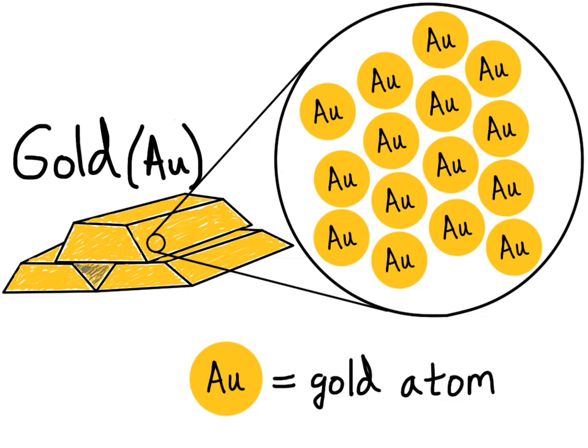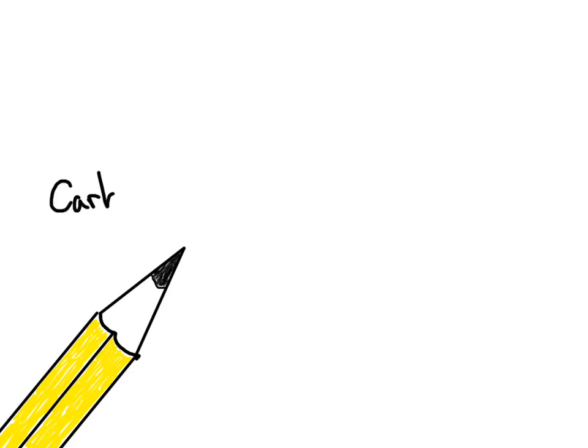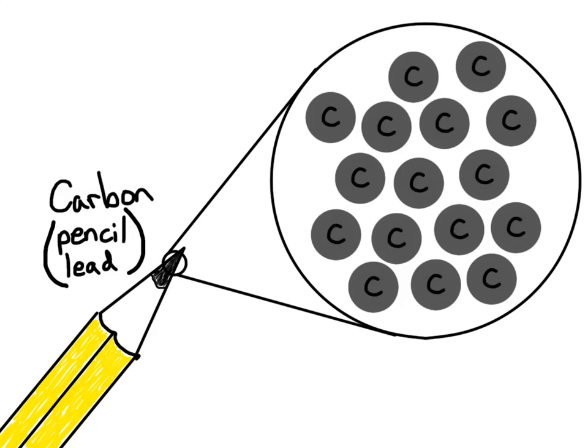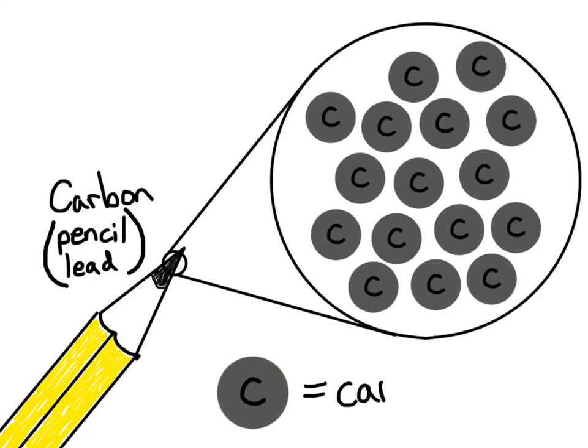Another element, more common, that we can find on the end of our pencil is the element carbon, which makes up our pencil lead. Like gold, carbon is an element. If we zoom in and look at the particles that make up the pencil lead, we would see all the same particle — all the same atom — and they would be carbon atoms. These gray spheres represent individual carbon atoms. So carbon is a pure substance as well; it's an element made up of just one type of atom, and when we zoom in, all you see are carbon atoms and nothing else.